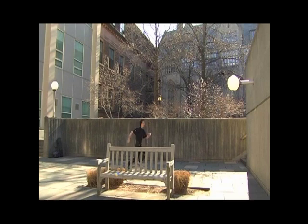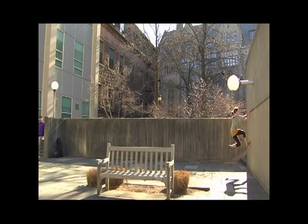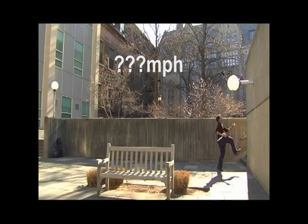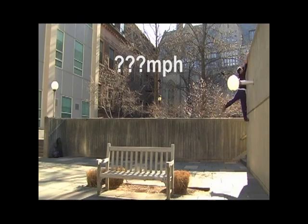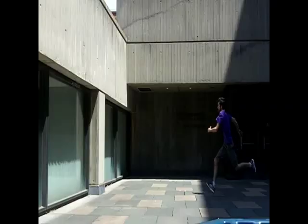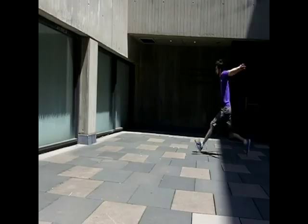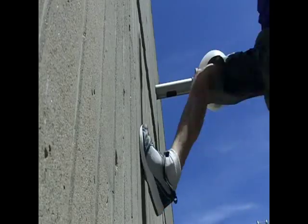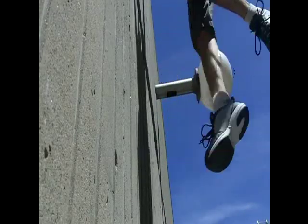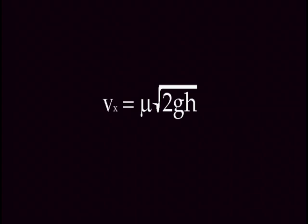Any experienced traceur should be able to tell you that the run-up into a wall run isn't a full-on sprint, nor is it a slow jog. So the question is: what determines the speed of the run-up? The answer is probably not what you would expect. The speed of the run-up is determined by the traceur's maximum vertical leap and the grip of his or her shoe on the wall, and can be determined with this equation. This is where those dependent variables come into play — we will come back to this equation.